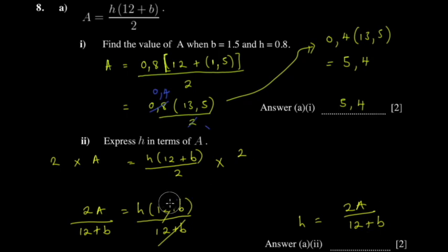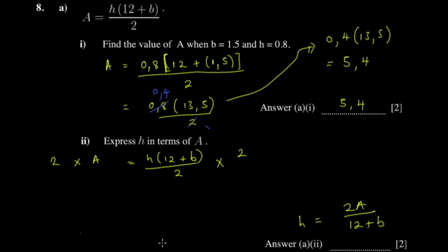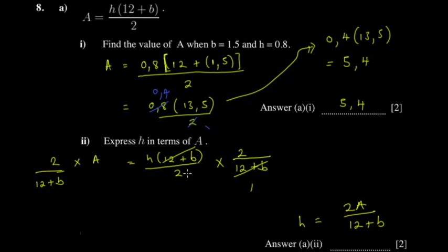There's a way to combine those two steps, especially if you're on a time crunch — this question is only two marks. Instead of multiplying by 2 only, you multiply by 2 divided by (12 plus b) on both sides, so you're not upsetting the equation. Terms cancel and you directly get h equal to 2a divided by (12 plus b).